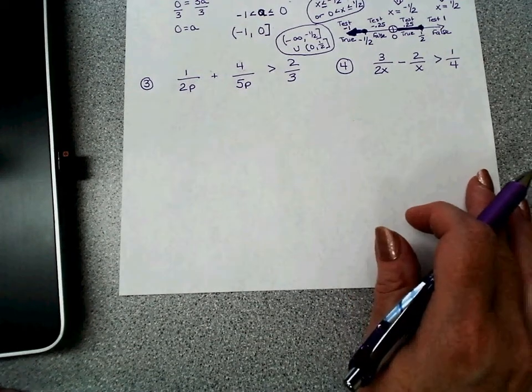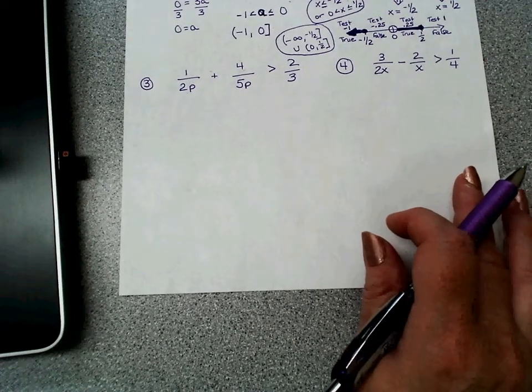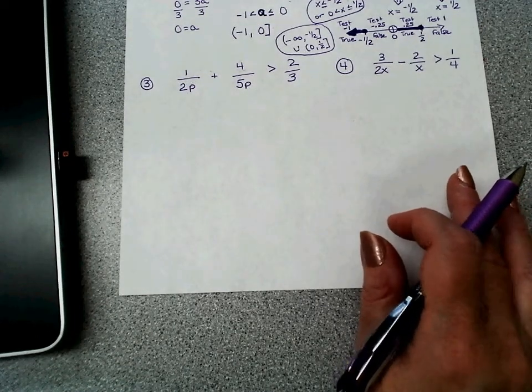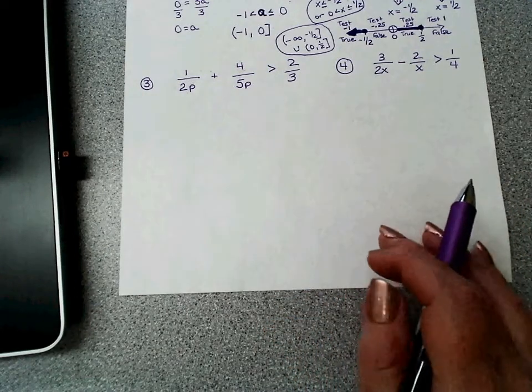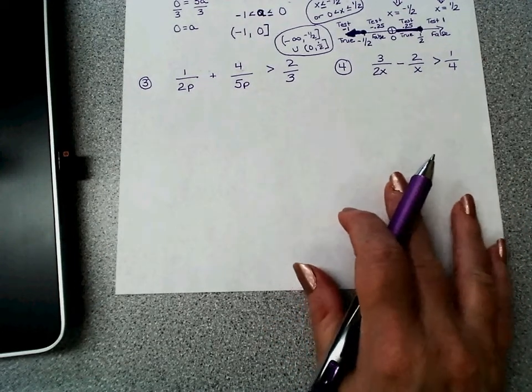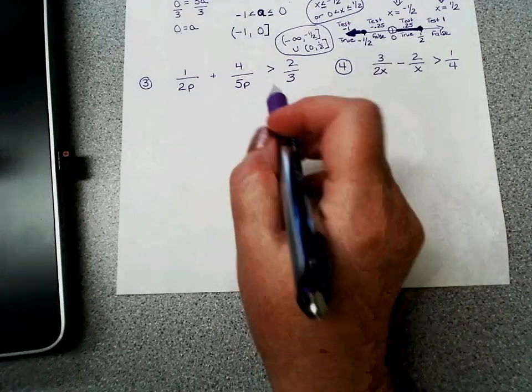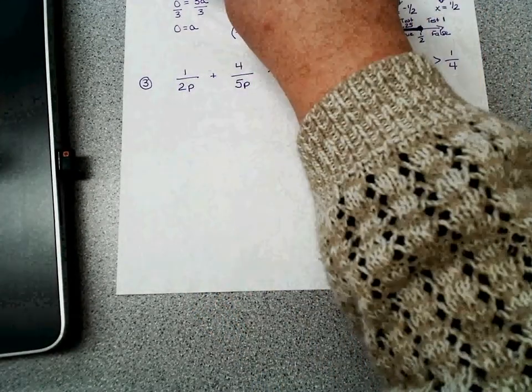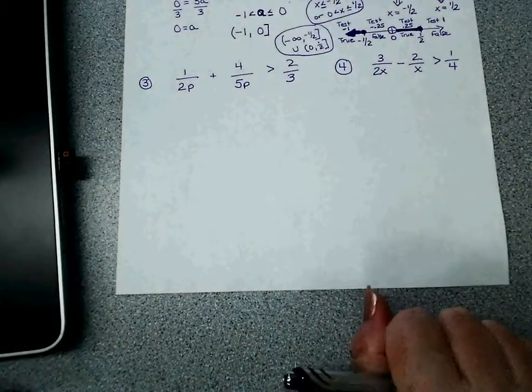Alright y'all, time for problem 3 on your worksheet that I asked you to stop the video and go and watch. So here it is. I think my lamp turned off, so let me turn my lamp back on. That gives a little bit more light.